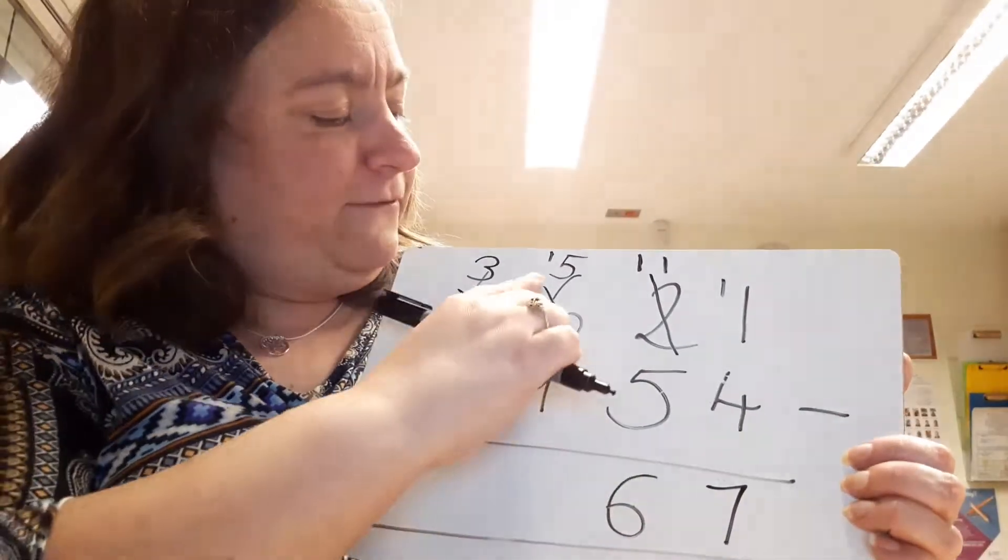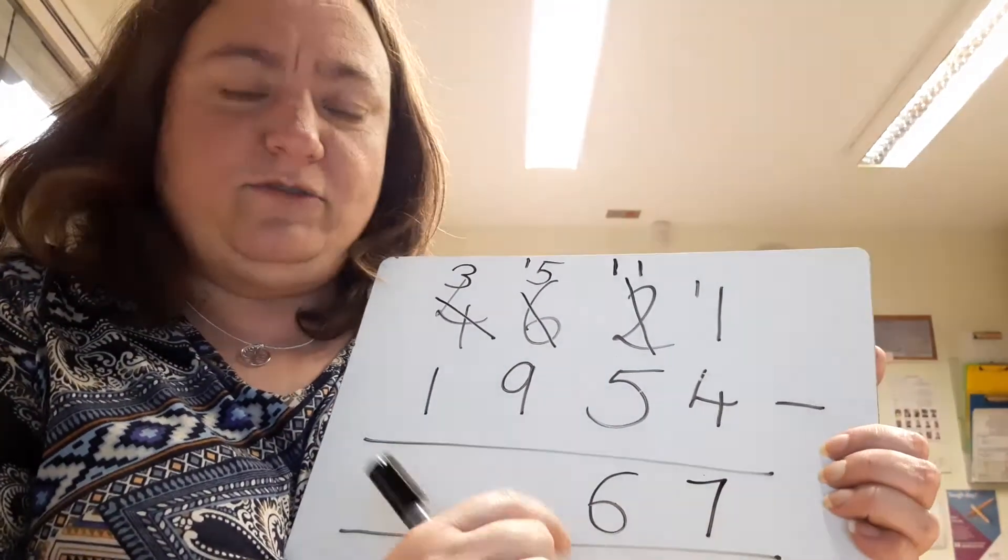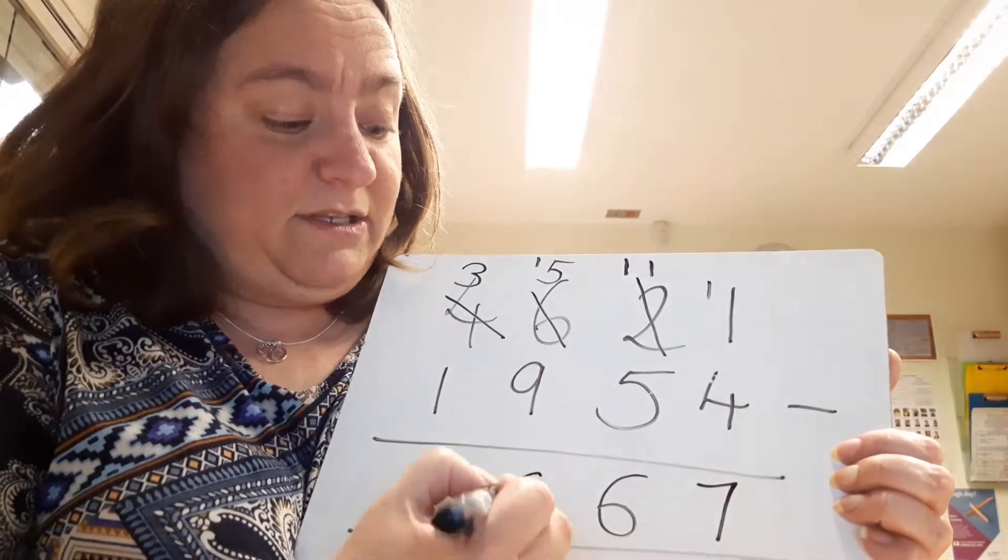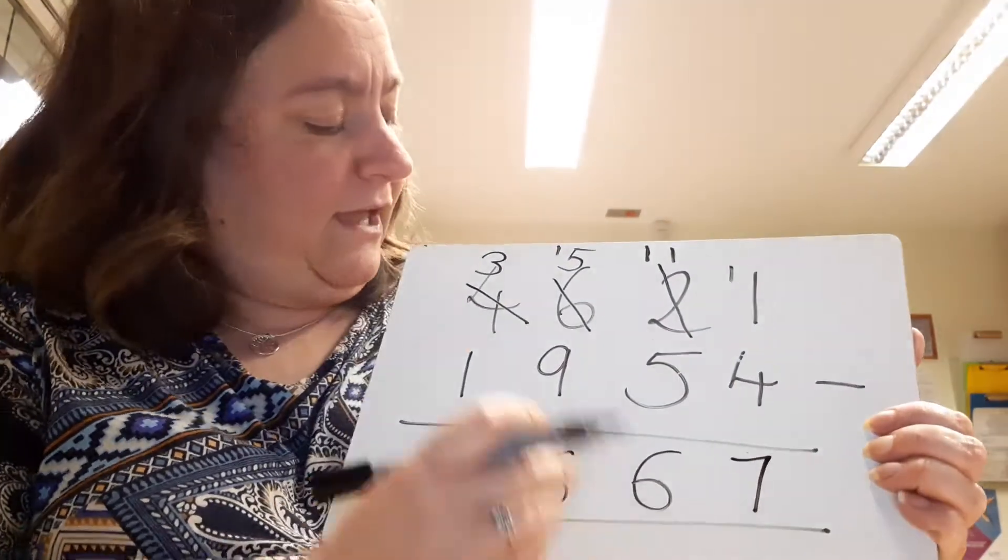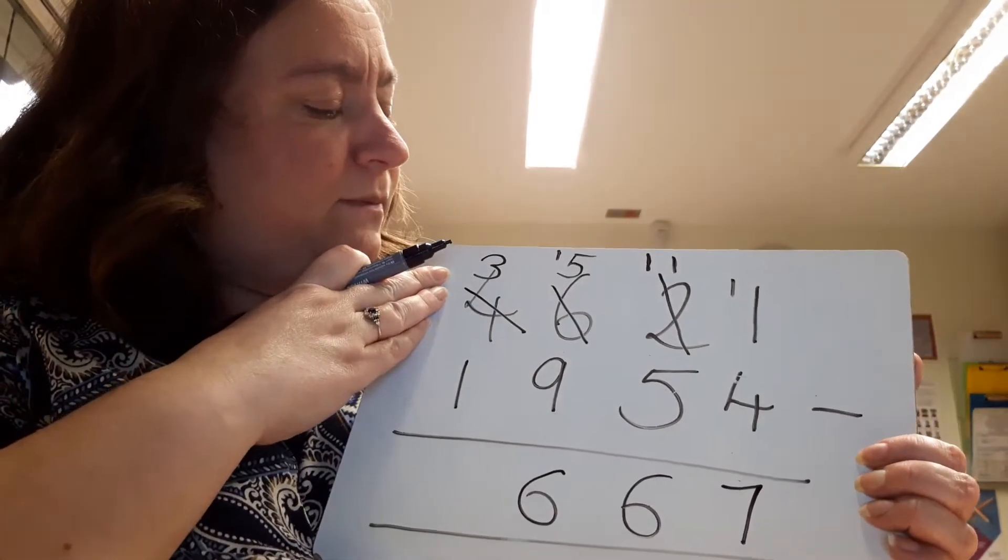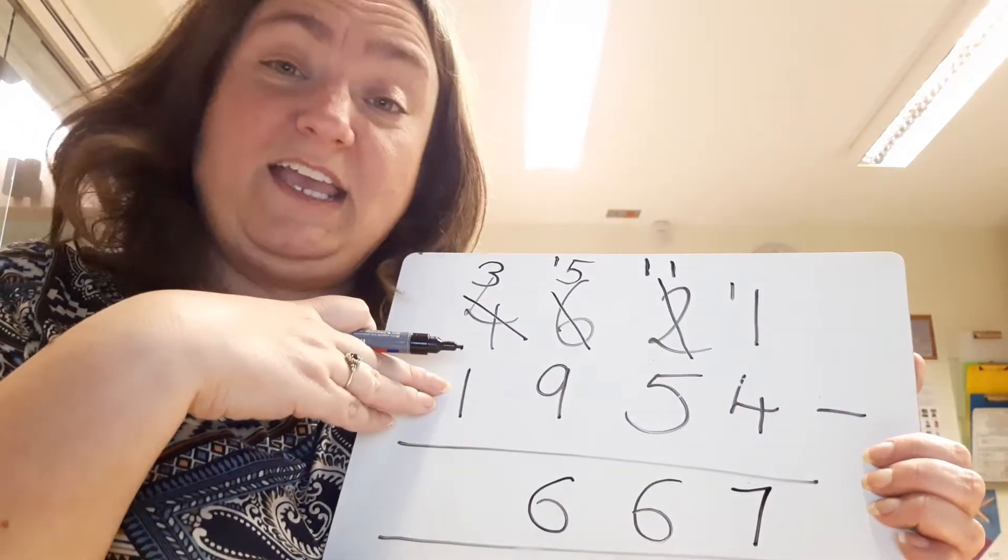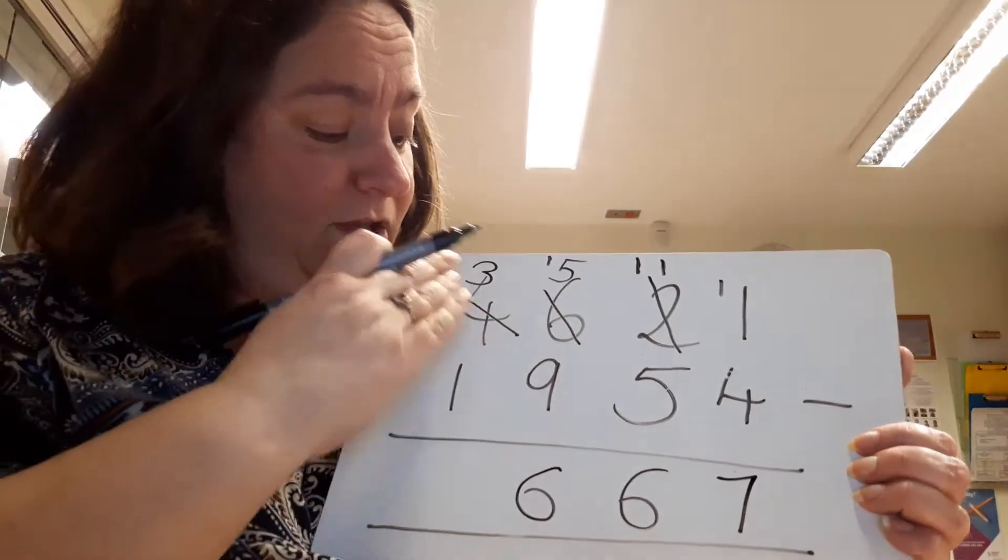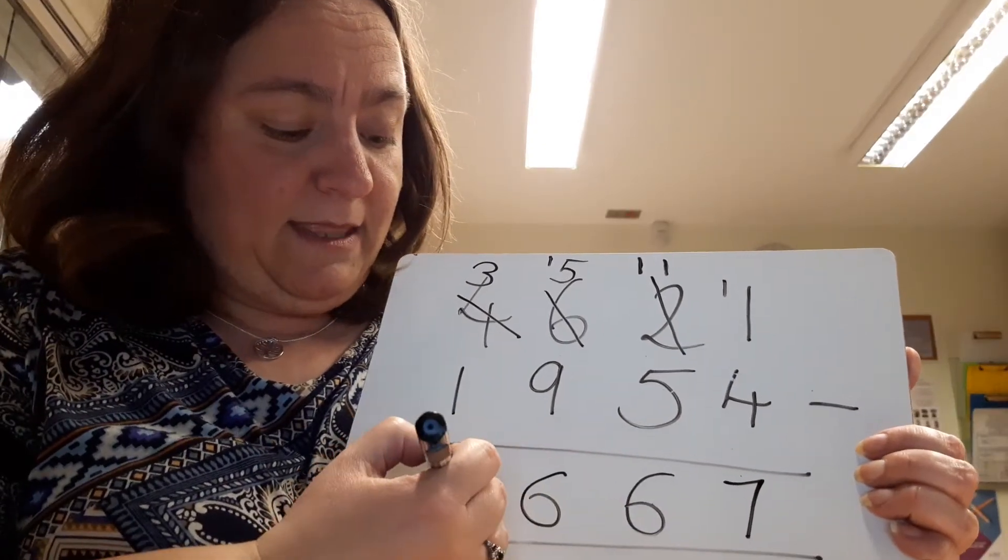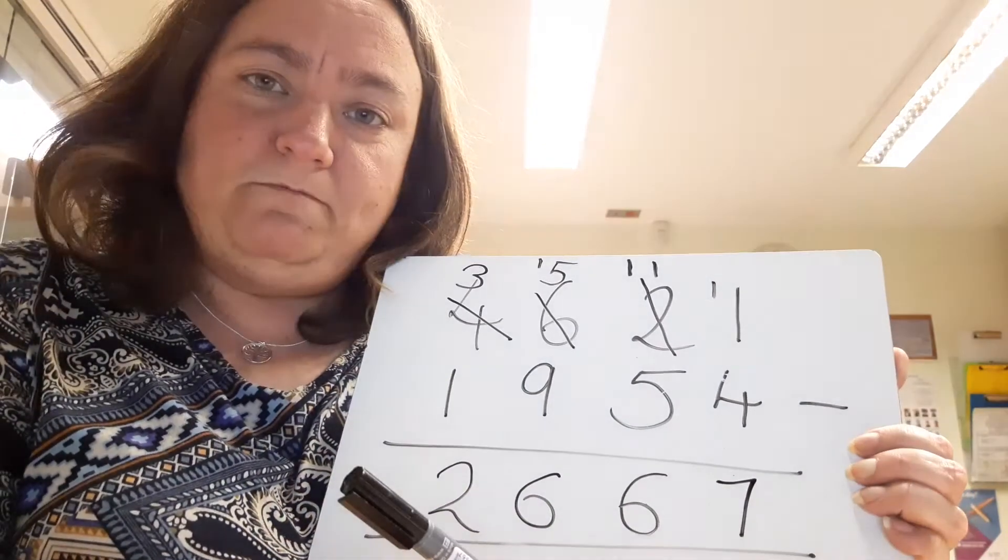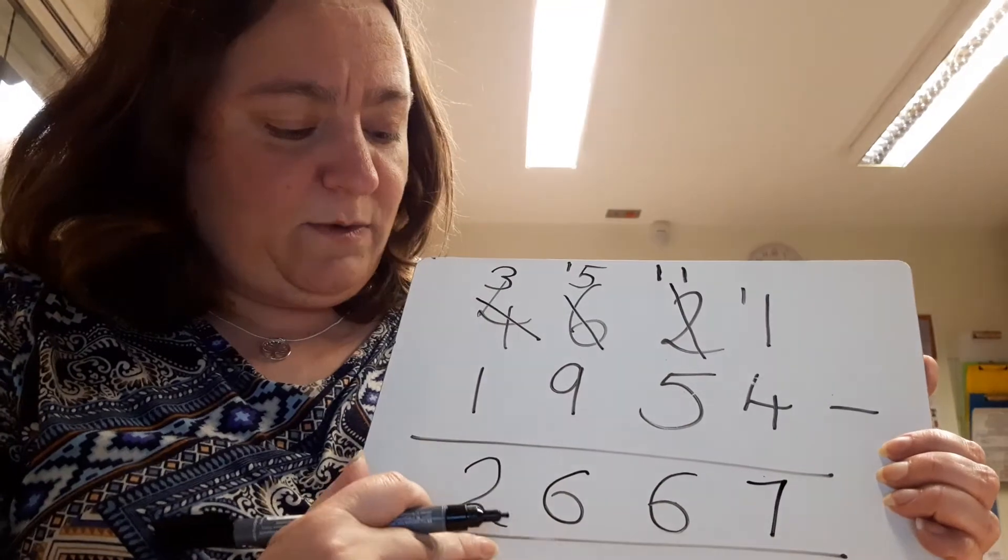So 15 hundreds take away 9 hundreds—I can do that—means I've got 6 left. And then finally I come to my thousands column. I can find that 3 take away 1, I can do. There's enough at the top for me to do that, and that ends with 2. So my answer to this question is